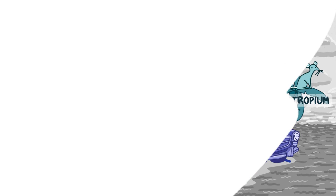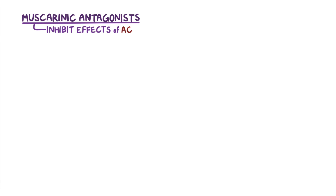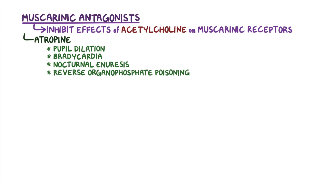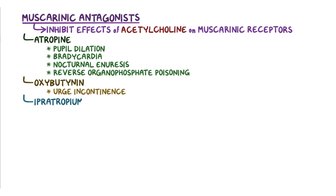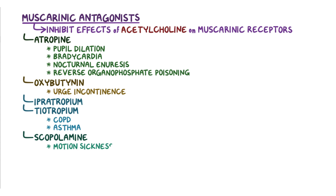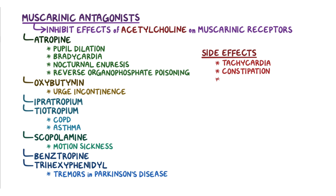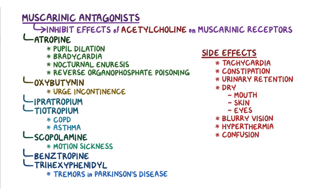Here is a quick recap. Muscarinic antagonists inhibit the effects of acetylcholine on muscarinic receptors. This includes atropine, which can be used to induce pupil dilation, treat bradycardia, nocturnal enuresis, and reverse organophosphate poisoning. Oxybutynin is given for urge incontinence, and ipratropium and tiotropium are used for COPD and asthma. Scopolamine is given for motion sickness, and benztropine and trihexyphenidyl are used to treat tremors in Parkinson's disease. Anti-muscarinic side effects include tachycardia, constipation, urinary retention, dry mouth, skin and eyes, blurry vision, hyperthermia, and confusion. The main contraindication is narrow-angle glaucoma.